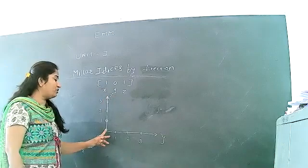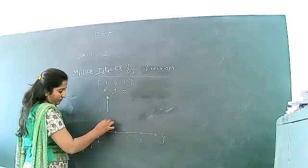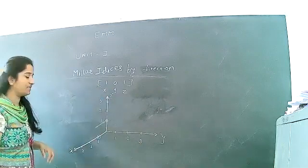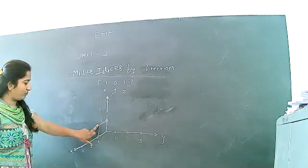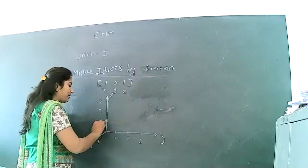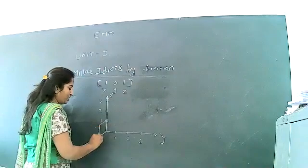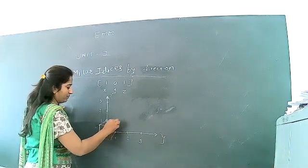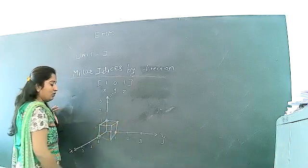Since there is no y component, you have to draw a parallel line to the x axis and a parallel line to the z axis coordinate. The next step is to draw a unit cell box. All coordinates are positive, so we can draw the box in this way.